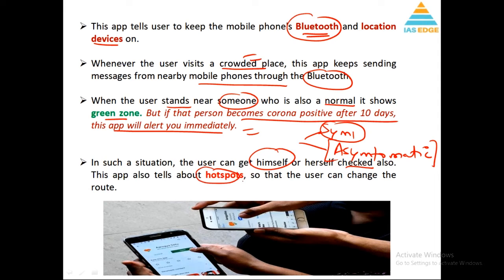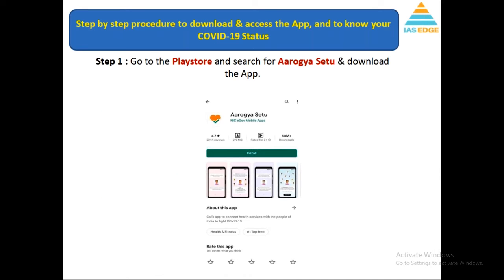This app also tells you about hotspots so that users can change their route. If there is a hotspot nearby, it will alert you. In the coming days, a surveillance approach will start where everybody will be tracked by the government, and that is where this app is very important. Health will become the priority and security will be secondary.